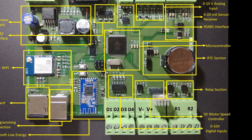The next block is the relay section. Basically, with the help of this block we are going to control an AC appliance. In order to control an AC appliance we need a relay, and this is the circuitry to drive a relay. In this section we will see how we can control an AC appliance with the help of our data logger.